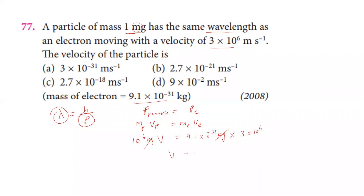The mass of the electron is 9.1 times 10 to the power minus 31 kilograms, and the velocity of the electron is 3 times 10 to the power 6. Dividing, we get 10 to the power minus 6 on the right side, giving an answer of 10 to the power minus 21.